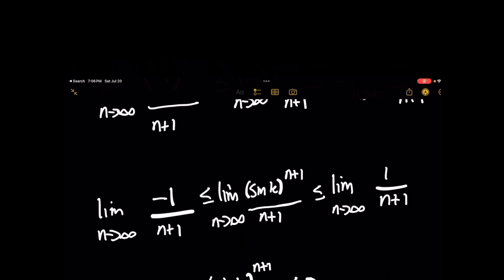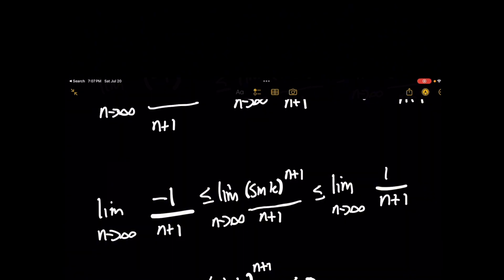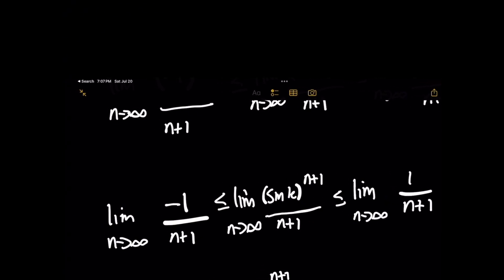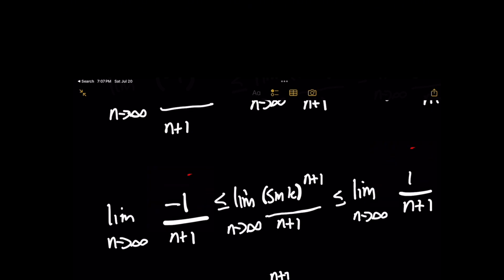On the upper bound, the numerator is 1. What do you remember about taking the limit as n approaches infinity of a constant divided by an expression such as n plus 1? The hint is that the numerator is not changing but the denominator is vastly growing — leave a comment and tell me what you think it is.